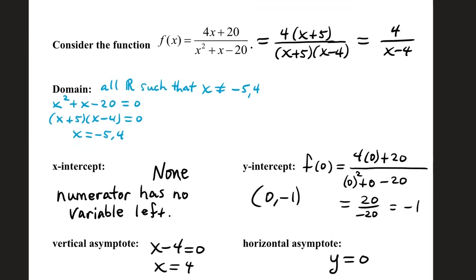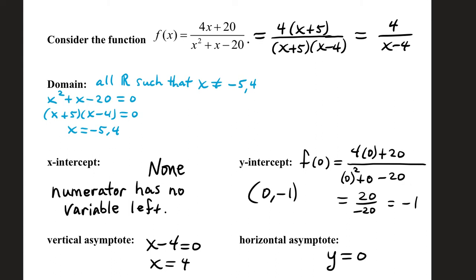For this next rational function, we have 4x plus 20 over x squared plus x minus 20. If we factor the numerator, we get 4 times x plus 5. Our denominator factors as x plus 5 times x minus 4. However, this x plus 5 factor can be removed by canceling. x minus 4 is a factor that does not cancel. So after canceling common factors, you're left with 4 over x minus 4. Your domain is all the good values of x. This factor is 0 when x equals negative 5; this factor is 0 when x equals 4. So your domain is all real numbers such that x is not negative 5 or 4. Because our reduced fraction has a numerator without a variable, there's no way to make the numerator 0, so there's no x-intercept.